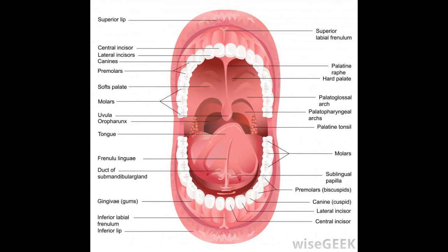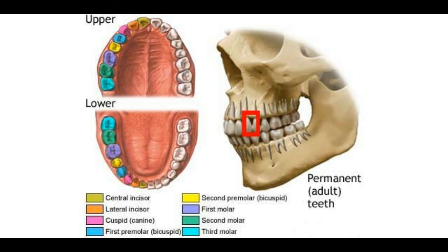Most bicuspid teeth have one root. Two is not uncommon, particularly in the upper teeth. In rare cases, the first bicuspid in the upper jaw, also known as the maxillary first bicuspid, can present with three roots. Additional roots can make extractions more complicated. As they are permanent teeth, bicuspids should not wiggle in the mouth. A dentist should be consulted if a bicuspid appears to be loose. As with any tooth, a dentist should also be consulted if there is pain or any evidence of damage following an impact or injury.